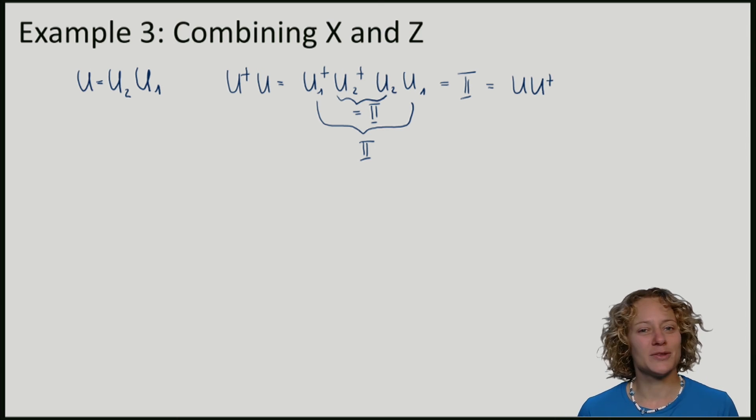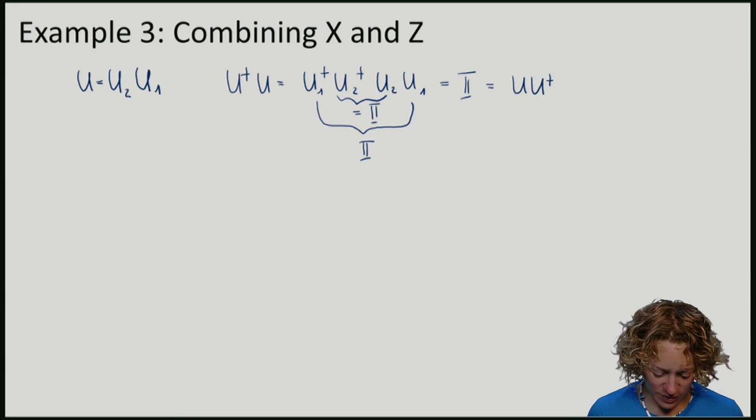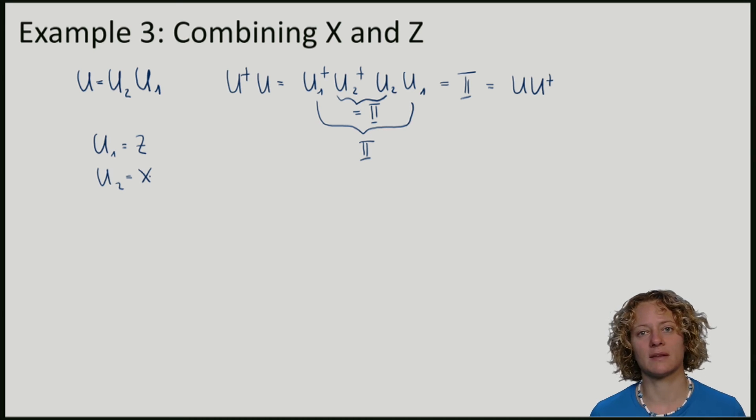So if we combine two unitaries, we get a unitary operation. And in particular, if we combine two unitaries, where the first one is some Z, and the second one is X, we get a unitary. And this unitary has a special name, it is often called Y.